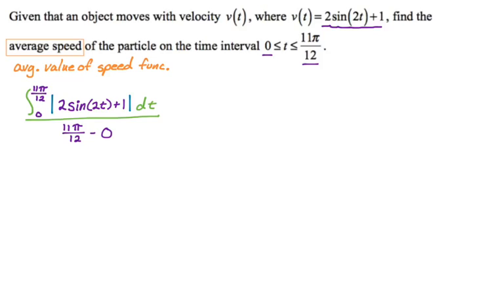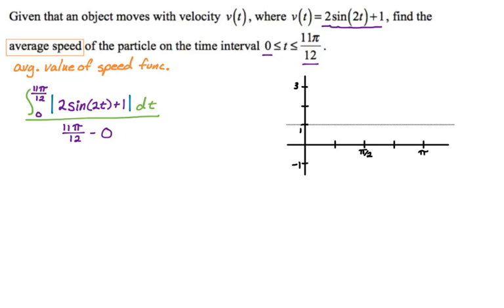Now I need to deal with the absolute value of 2sin(2t) + 1. I'm going to first graph 2sin(2t) + 1 — this is a pre-calc type of thing, so I'll link to how I graph trig functions. I find the period: 2π over b, b is 2, so the period is π. Divide by 4, put those down, label the y-axis. The sinusoidal axis is at 1. Since it's sine, it goes intercept, maximum, intercept, minimum, intercept. Fill in the curve. What I really need to know are the zeros — when velocity is negative — so I can handle the absolute value.